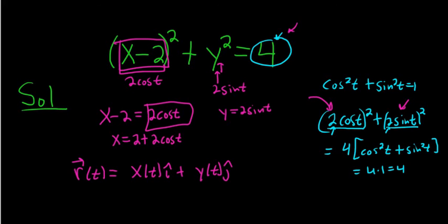And then you just replace x and y with what we said they were. So the vector-valued function, r of t, is equal to 2 plus 2 cosine t, i hat, plus 2 sine t, j hat. That's it.